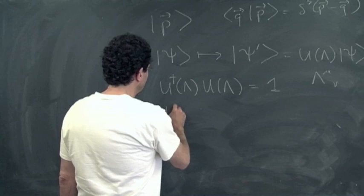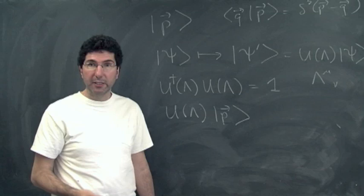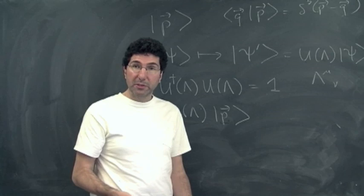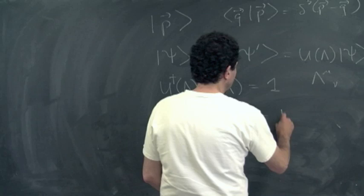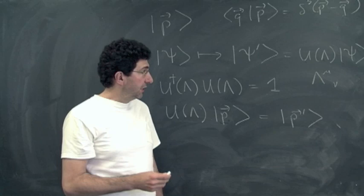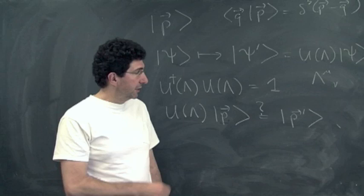If we look at this unitary transformation acting on a state |P⟩, and this state describes a particle with momentum P, then clearly the Lorentz transformed state has to describe a particle with the Lorentz transformed momentum. So it's very natural to define this operator by saying it takes |P⟩ to the state |P'⟩, where P' is the Lorentz transformed momentum. Now we'll see that this is not quite right — I'll put a question mark there.